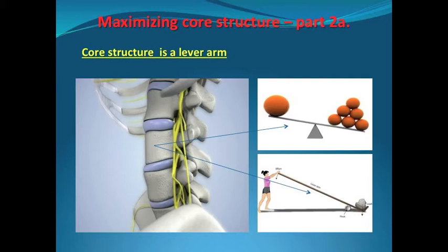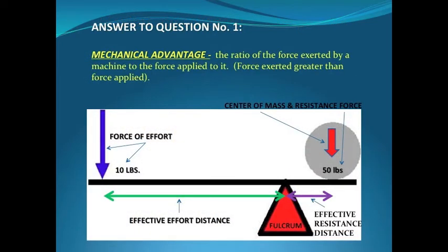Much like the two pictures you see here depicting lever arms, your core structure works just like those. As we go along, this will become very clear. Back to question number one: how do I make my core structure stronger? The answer is by making the lever arm so that it possesses mechanical advantage — in simple terms, a lever arm that produces more force than the effort required to create that force.